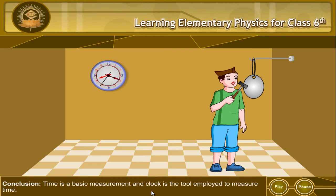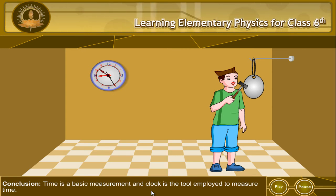Conclusion: Time is a basic measurement and clock is the tool employed to measure time.